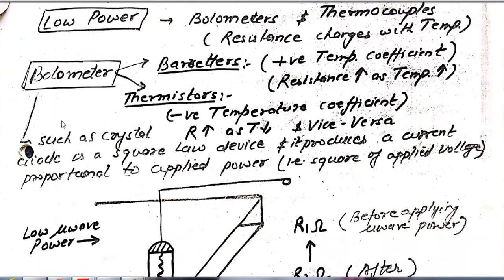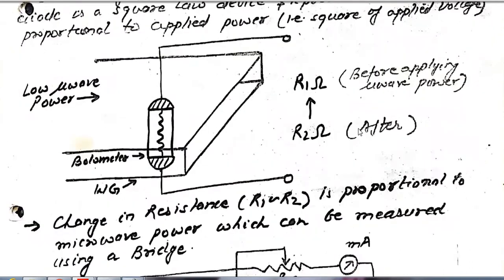Such bolometers use a diode, where the diode is a square law device and it provides a current proportional to the applied power. Because this is a square law device, the applied power is the square of the applied voltage, as we know from the relation between power and voltage.